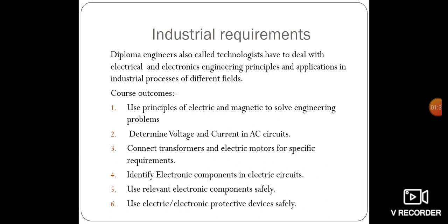The course outcomes are: first, use principles of electric and magnetic fields to solve engineering problems; second, determine voltage and current in AC circuits; third, connect transformers and electric motors for specific requirements; fourth, identify electronic components in electric circuits; fifth, use relevant electronic components safely.